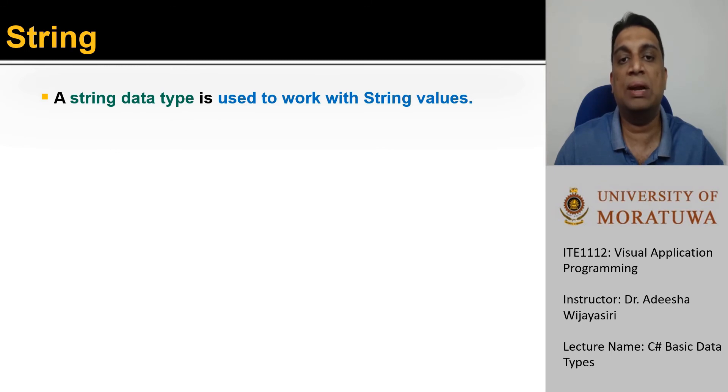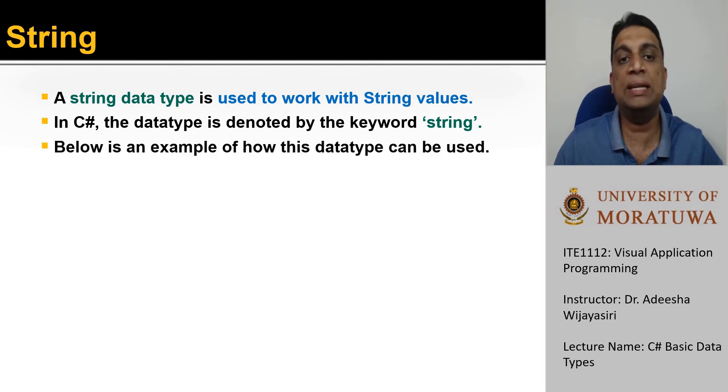Another important data type available in C sharp is the type string. If you want to work with a set of characters or a sentence, then you can use strings for your task. As shown in this example, you can create a variable of type string and assign a string value to the variable.